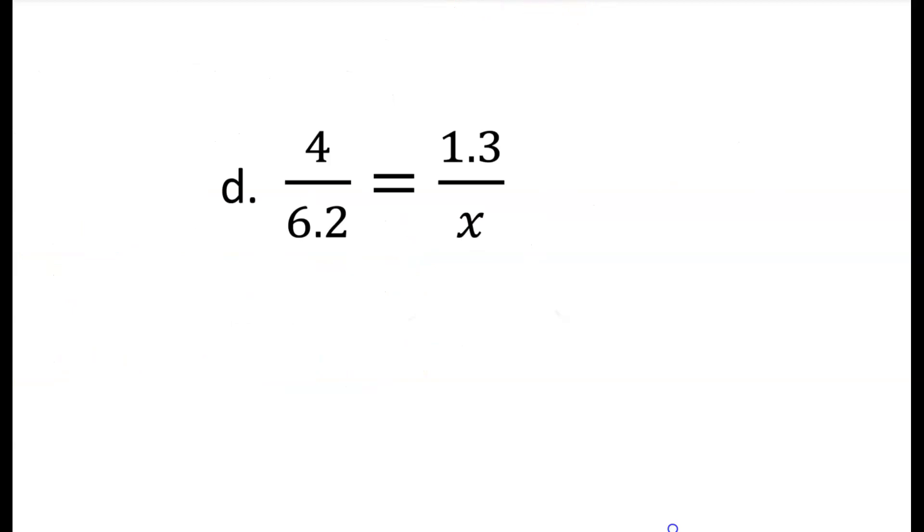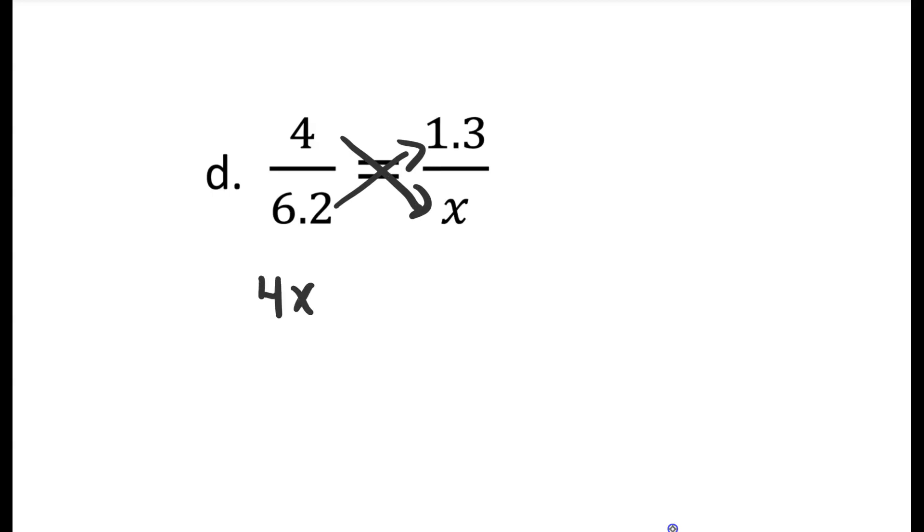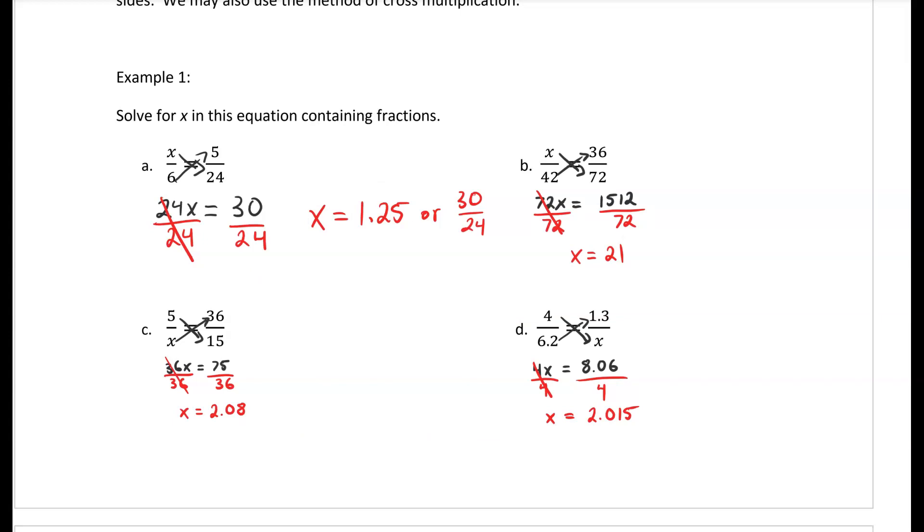For d, we have x on the other side of the equation but it's still following the same steps. We cross multiply, giving us four times x, which is four x, equals six point two times one point three, which gives us eight point zero six. We isolate x by dividing by four on both sides, giving us x equals eight point zero six divided by four, which is two point zero one five.